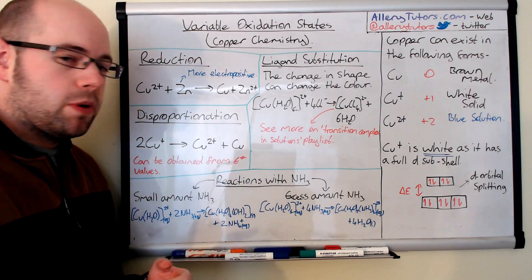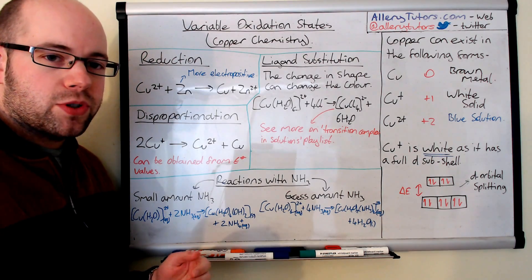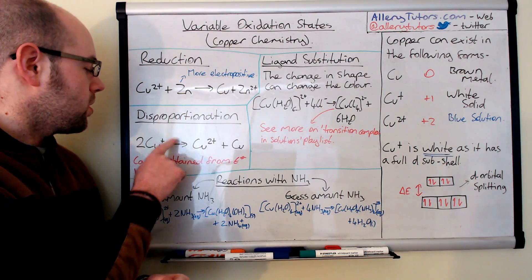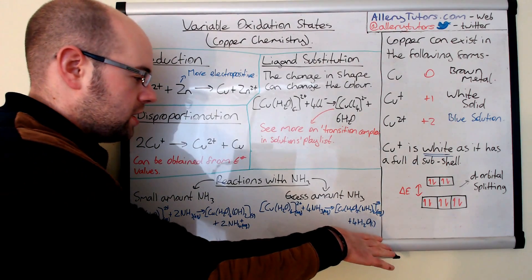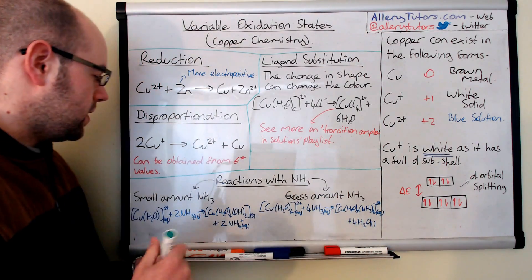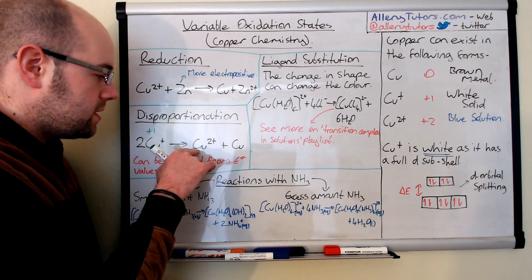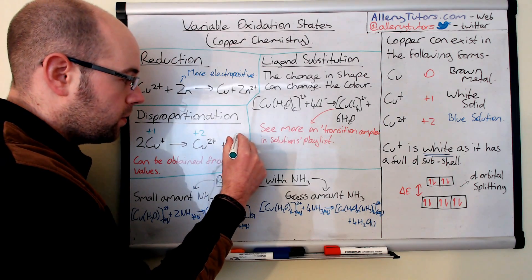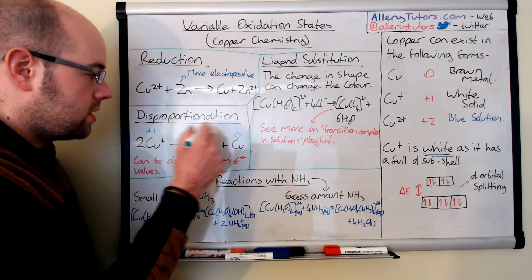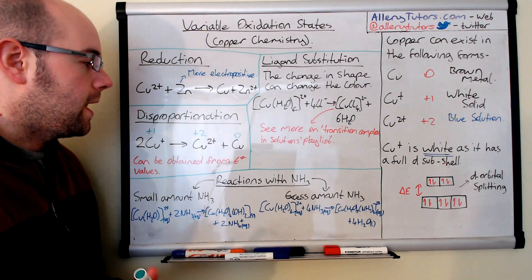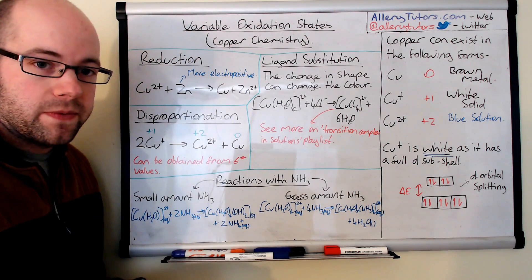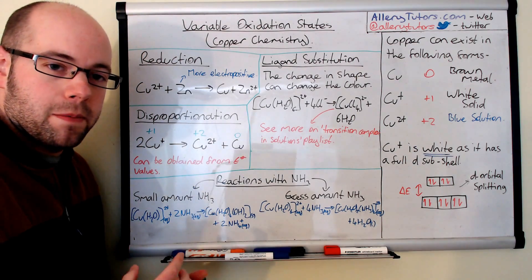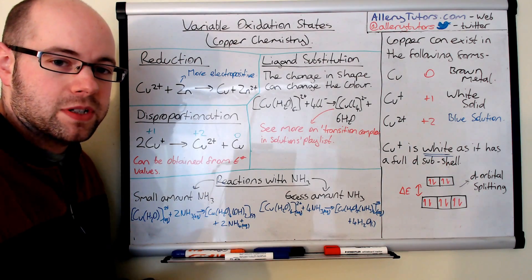It can also do what we call a disproportionation reaction. And disproportionation means that an element is simultaneously oxidised and reduced. So in this case, we've got copper one plus, which has an oxidation state of plus one, and I'll write this in green. So I'll put plus one here. And you can see that it's been oxidised here because it's gone up, the oxidation number has increased. But also we form copper as an element, and that's obviously reduced. So this is an example of a disproportionation reaction. And this can be evidenced from E naught values as well.